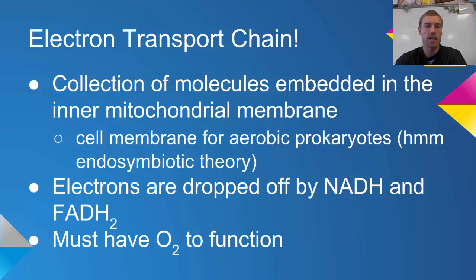The electron transport chain is a collection of molecules that are embedded in the inner mitochondrial membrane. Mitochondria are made up of a double membrane. We've got the outer membrane and then the inner membrane. These molecules are located inside the inner membrane.